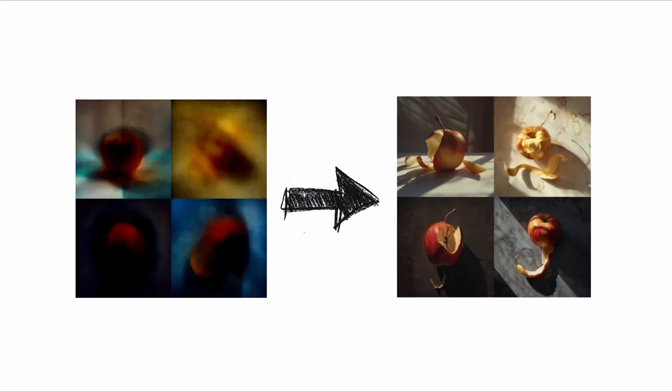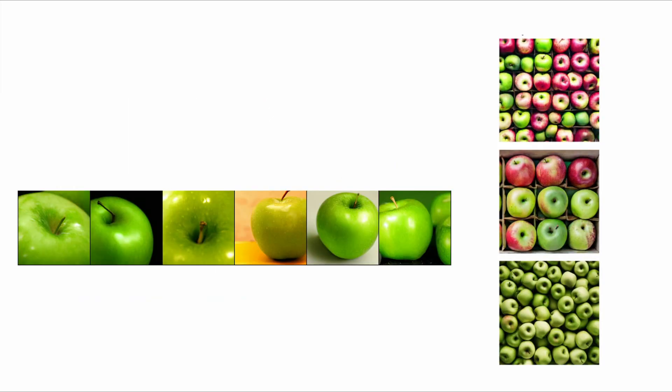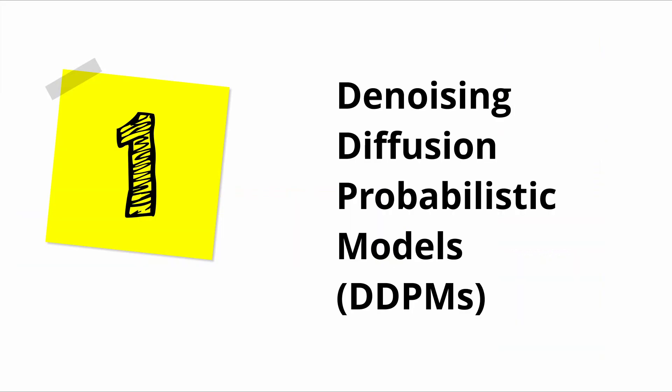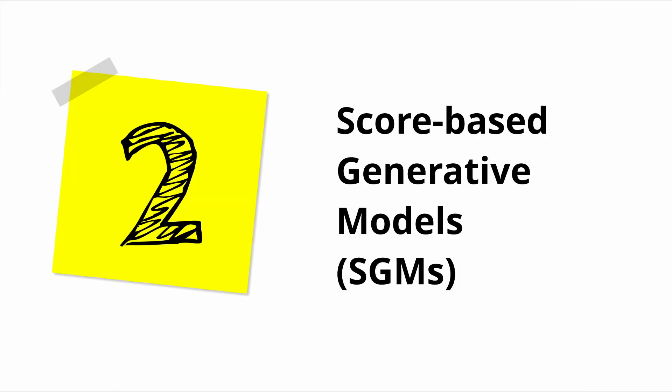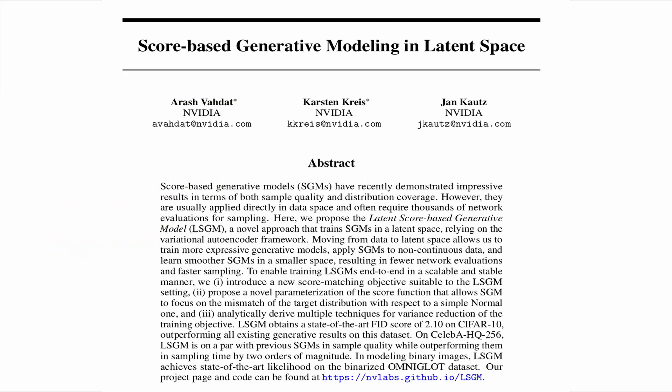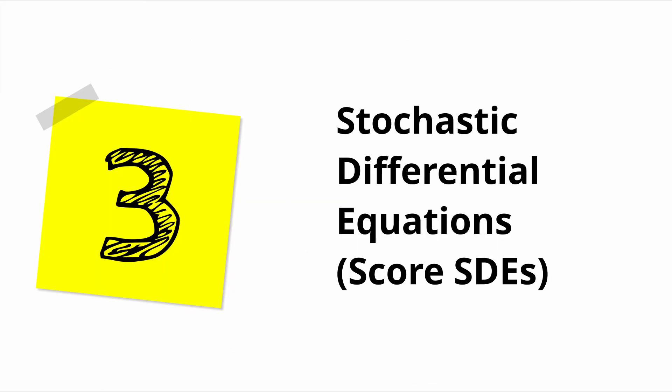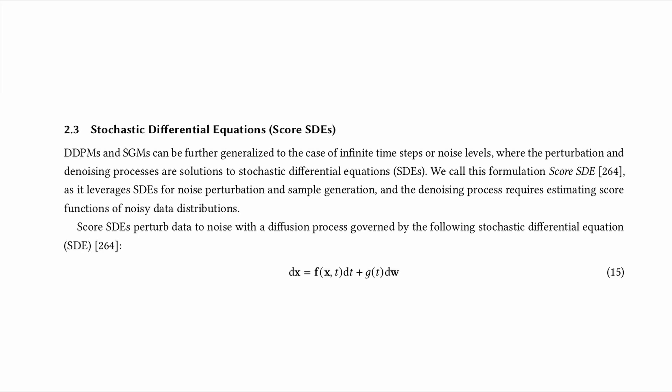Three trends emerge from diffusion models, each tackling the diffusion process differently: denoising diffusion probabilistic models or DDPMs, score-based generative models or SDMs, and stochastic differential equations or score SDEs.